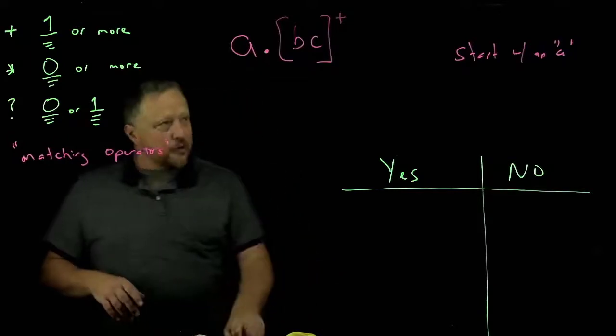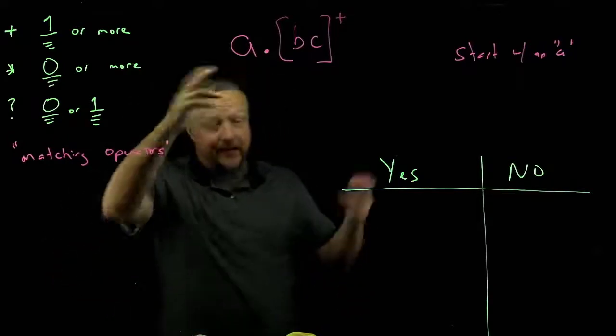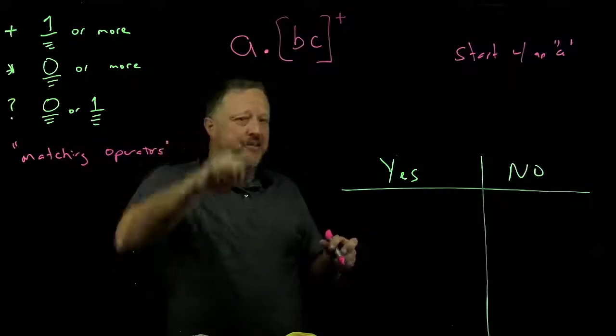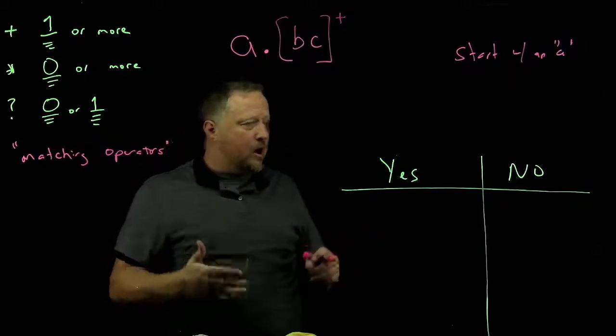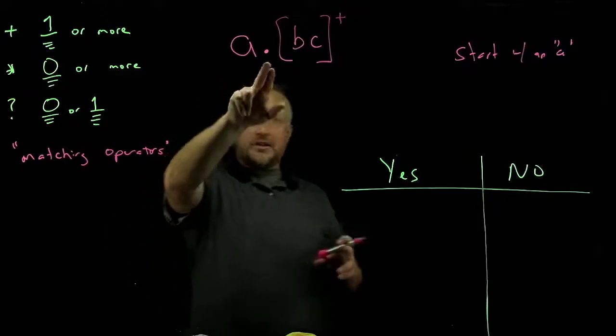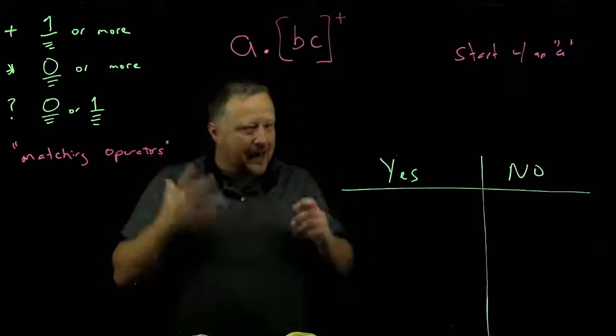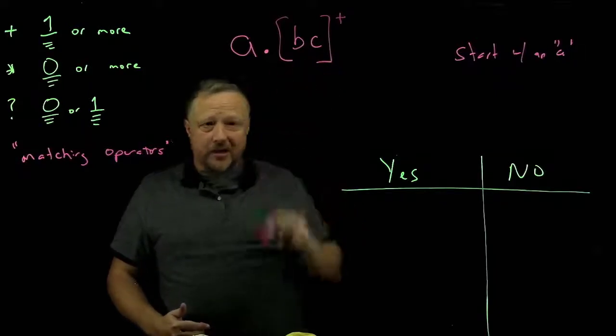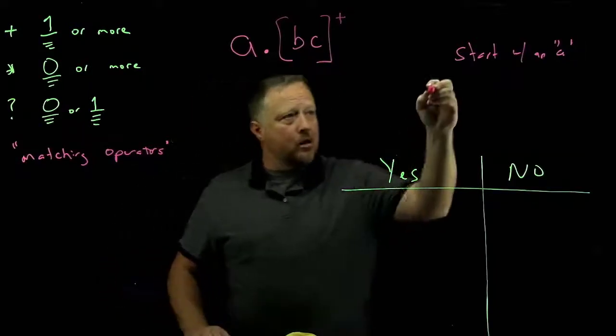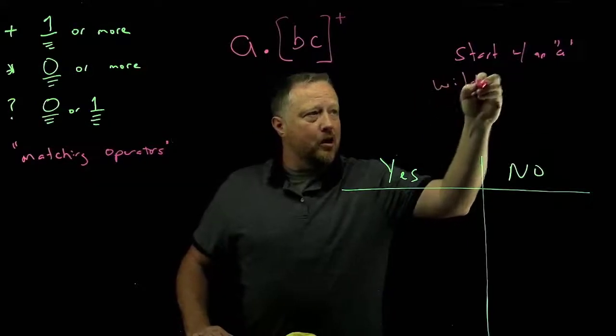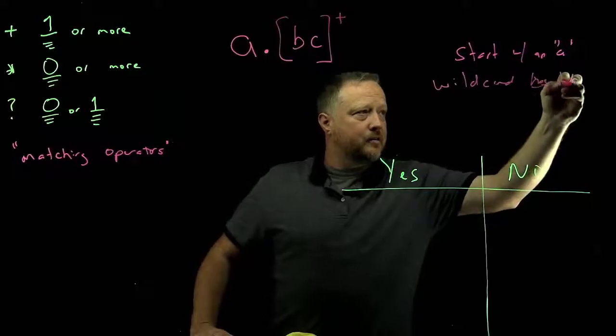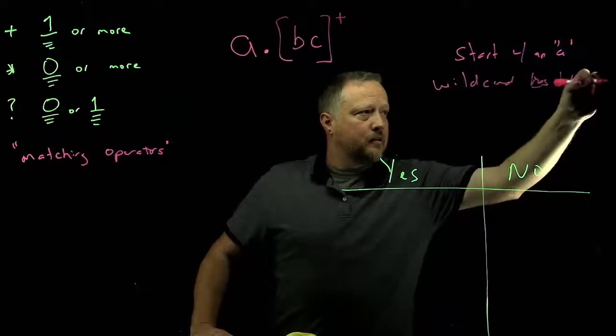So here's our last one. Let's go with the narrative. Starts with an A. Next character has to be a wild card. Now remember, this cannot be a blank. It's got to be something. Now the bad part is it could be anything. It could be another B. It could be another C. It could be a lot of different things here. So wild card is next. Wild card has to be next.